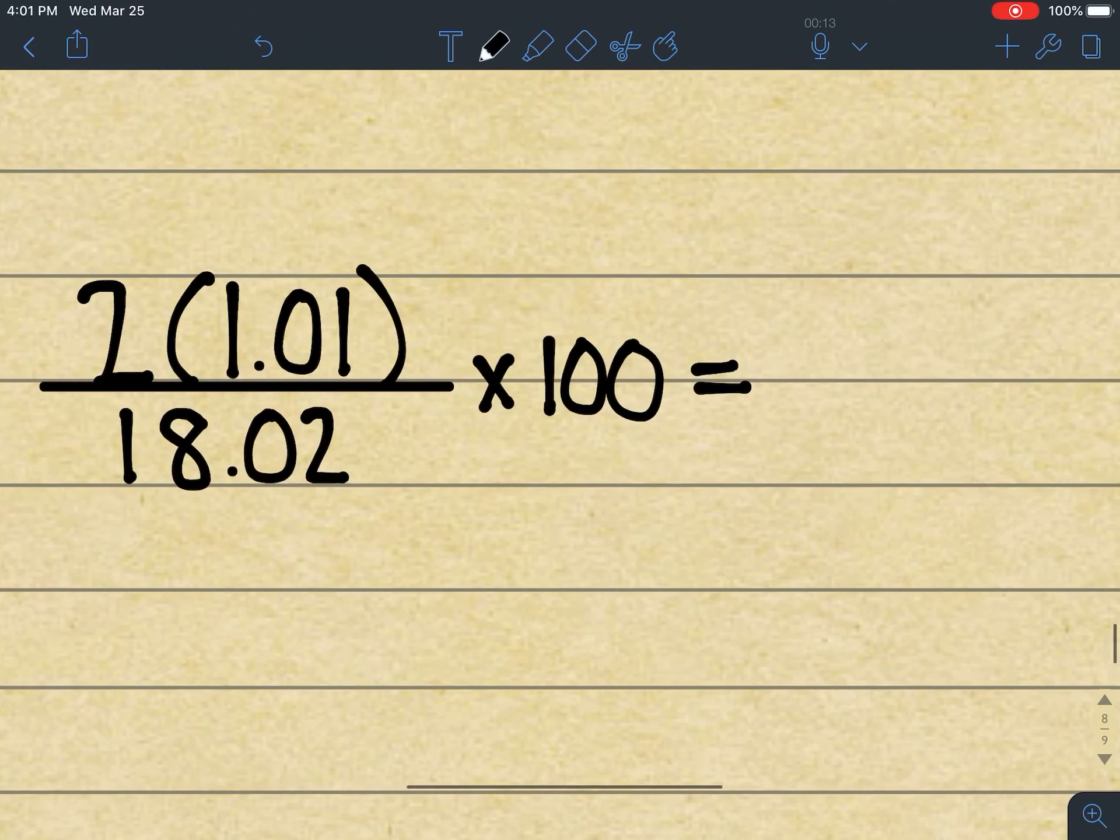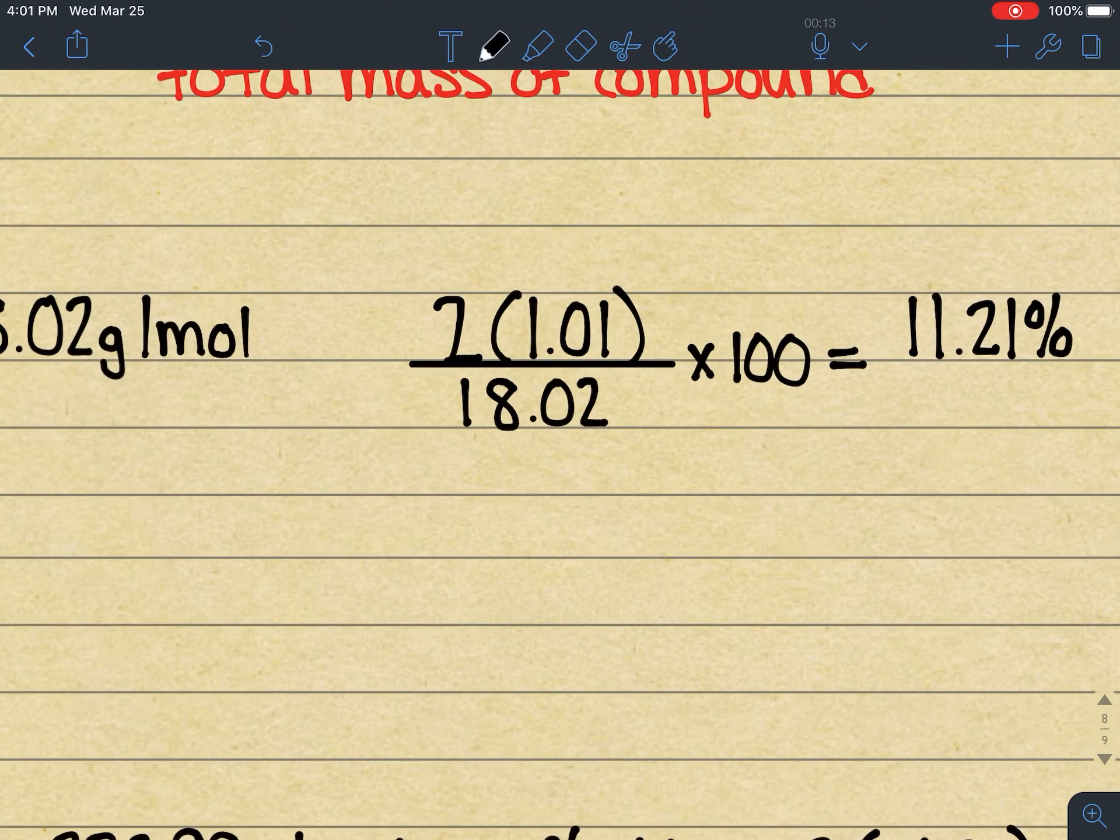Our total, when we plug that into the calculator, so 2 times 1.01 divided by 18.02 times 100, we get 11.21%. Now there's two ways for us to figure out the percent composition of oxygen, so this one was for hydrogen.